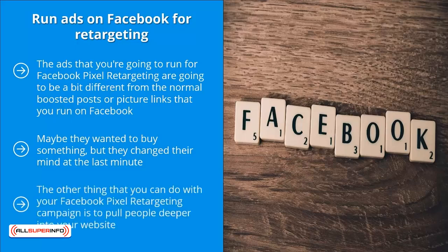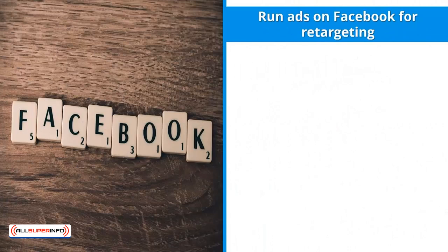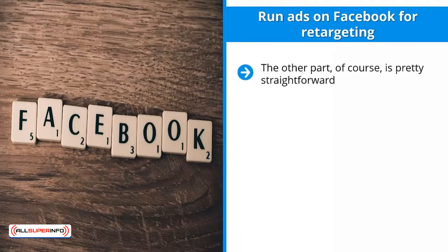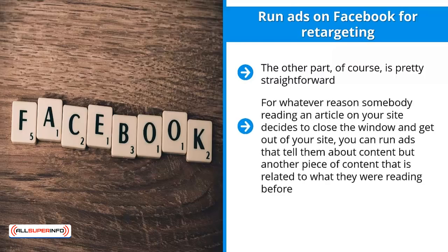The other thing you can do with your Facebook pixel retargeting campaign is to pull people deeper into your website. A website is typically composed of two parts. The first layer is the content layer, where you're trying to get people to know about the problem, like your particular solution, and eventually trust the solution enough so they can buy. The other part is straightforward — it's all about buying. A lot of people go through the content layers but never make it through to the actual buying part or your conversion page. This is where retargeting ads that pull people deeper into your website makes a lot of sense.